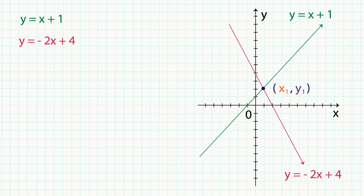But let's go back to our diagram. Since the intersection of the two lines is x1 comma y1, I will substitute the coordinates into the functions. So we get y1 is equal to x1 plus 1, y1 is equal to negative 2x1 plus 4.